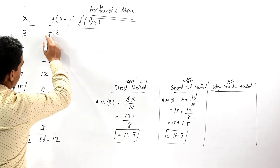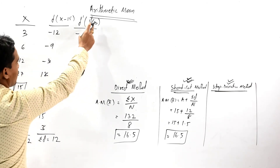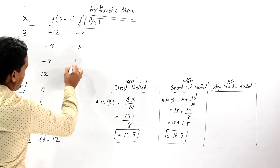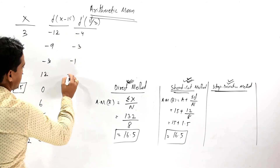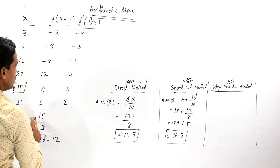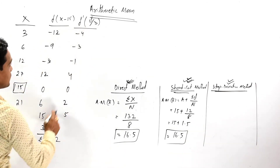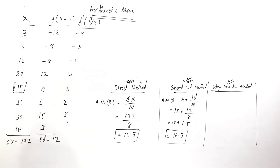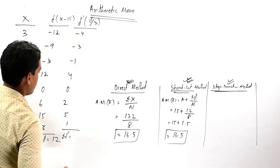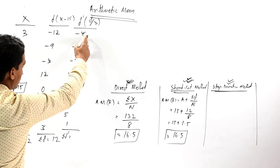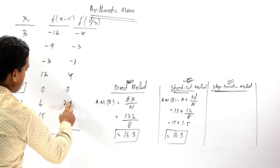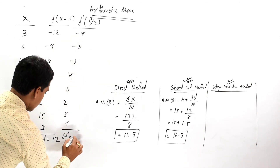D dash values: minus 12 by 3 equals minus 4; minus 9 by 3 equals minus 3; minus 3 by 3 equals minus 1; 12 by 3 equals 4; 0 by 3 equals 0; 6 by 3 equals 2; 15 by 3 equals 5; 3 by 3 equals 1. The summation of D dash — after cancelling — is 5 plus 2 equals 7, minus 3, that is 4.